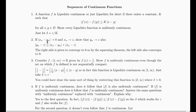If x sub n minus y sub n converges to zero, and x sub n is converging to z, show that y sub n converges to z also. Well, that's rather easy because |y sub n minus z| is less than or equal to |y sub n minus x sub n| plus |x sub n minus z|, by the triangle inequality. For large n, each term is very small, therefore the sum is small. So yes, this is true.